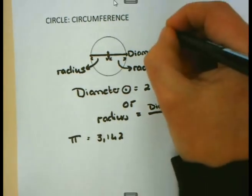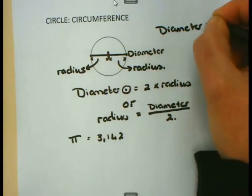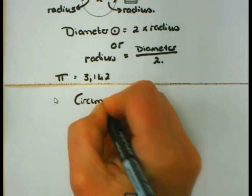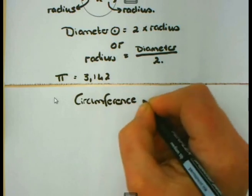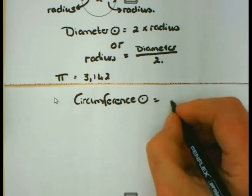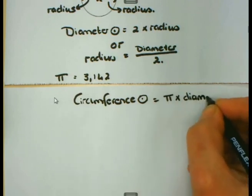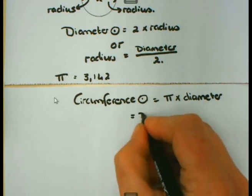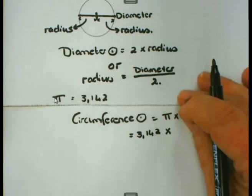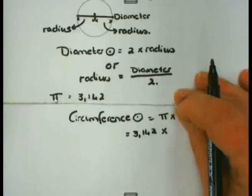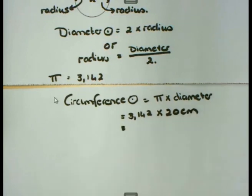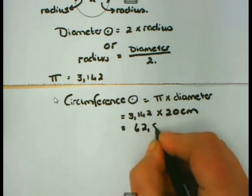Say for instance I have a circle and the circle has a diameter of 20 centimeter. If I'm now going to calculate the circumference of the circle, I am going to use one of two formulas. The first one is pi times diameter. It's pi times diameter — meaning I simply substitute the value of pi, 3.142, and I multiply it by the value of the diameter. We said we have a circle with diameter of 20 centimeter, so I'm substituting 20 centimeter. And if I work that out, I get 62.84 centimeter.